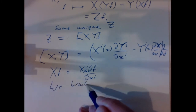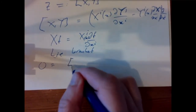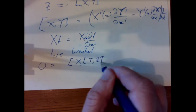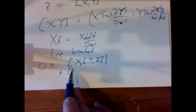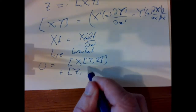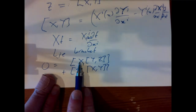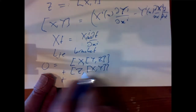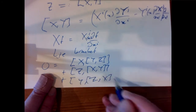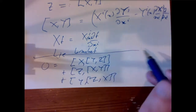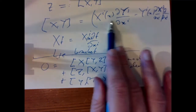This is called the Lie bracket of the two vector fields. There's a long but important identity called the Jacobi identity: for any three vector fields X, Y, Z, the cyclic sum [X,[Y,Z]] + [Y,[Z,X]] + [Z,[X,Y]] = 0. I'll leave it to you to check, as it's a good exercise in expanding these expressions, though it's rather lengthy.